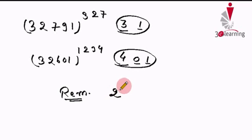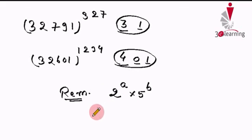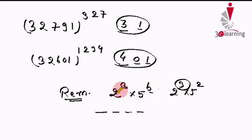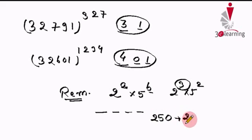If the divisor is in the form 2^a × 5^b — for example 480 — then the problem is asking you to check the last few digits of the number. Specifically, you check the last max(a, b) digits. For instance, if the divisor is 2^3 × 5^2, they are asking for the last three digits. If the divisor is 250 = 2 × 5^3, they are asking for the last three digits.